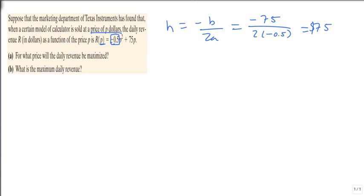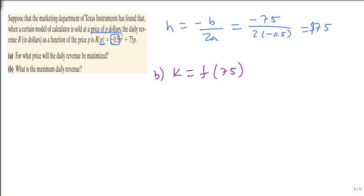To find the maximum revenue, so that was a, to find the maximum revenue we find k, which is f(75), which is going to be, this is where a calculator comes in handy, so we grab a calculator.